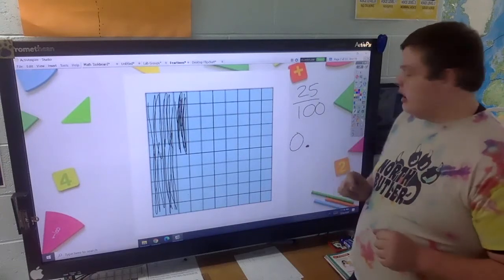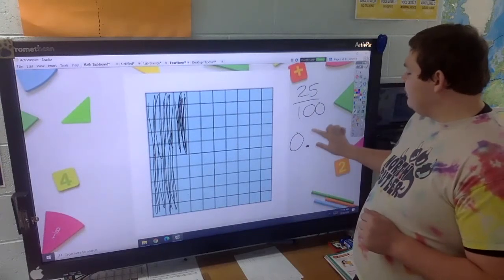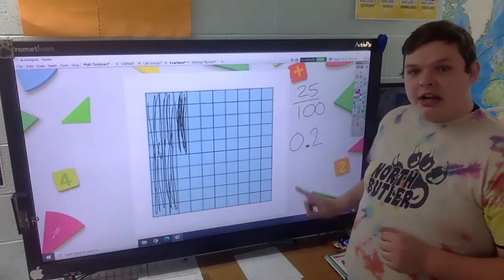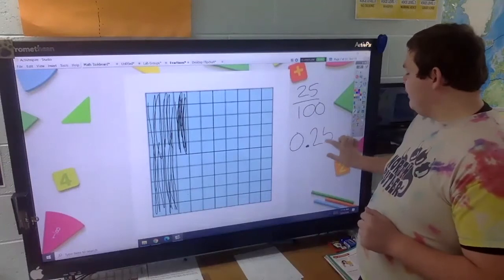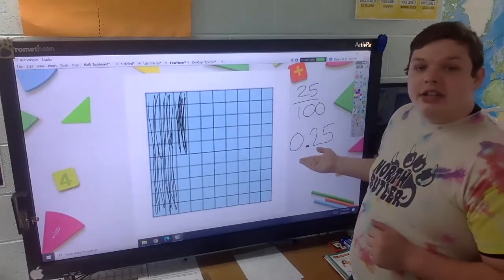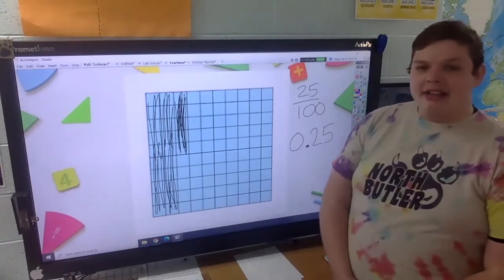Do not forget your decimal point. That's super important. And we have two tenths. So that goes in the tenths place. And then we have five ones. Zero and 25 hundredths as a decimal.